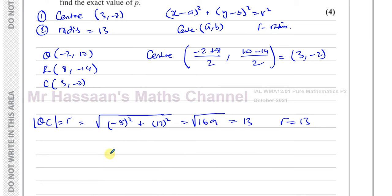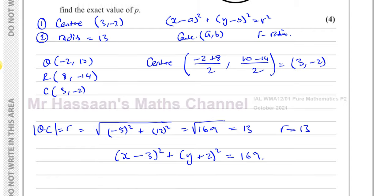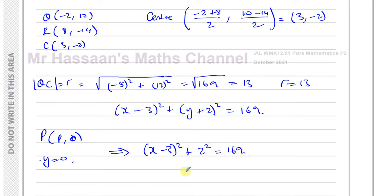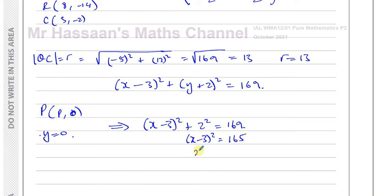So the equation of circle C2 is x minus 3 squared plus y plus 2 squared equals 169. The point P has coordinates (p, 0), so we substitute y equals 0: x minus 3 squared plus 2 squared equals 169, giving x minus 3 squared equals 165. Therefore x minus 3 equals plus or minus the square root of 165, so x equals 3 plus or minus the square root of 165.